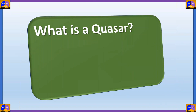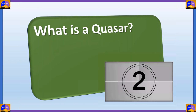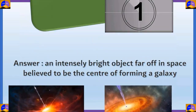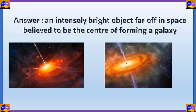Let's move on to the next question. What is a quasar? Come on, take a guess. The answer is an intensely bright object far off in space, believed to be the center of a forming galaxy.